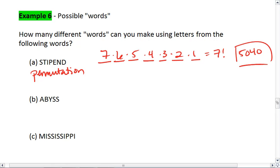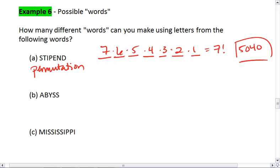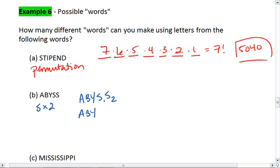Well, let's look at abyss. This makes it a little bit more complicated. In abyss, we have 2 s's. So a, b, y, s1, s2 is actually the same as a, b, y, s2, s1. It's a different rearrangement of the s's, but it gives you the same exact word. This is a combination of a permutation and a combination problem. So this is both permutation and combination.